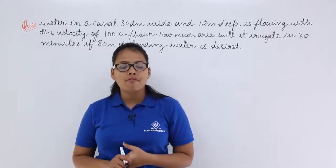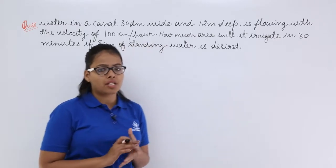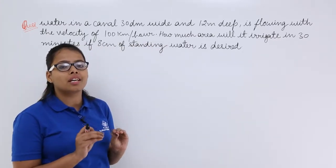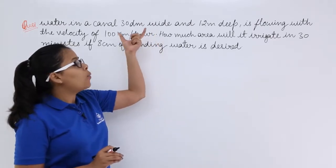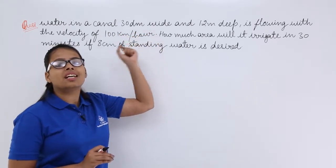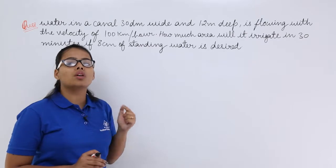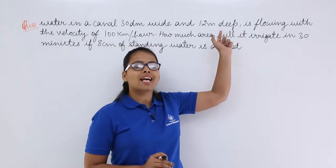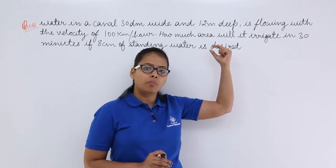How much area will it irrigate in 30 minutes if 8 centimeter of standing water is desired? This statement may seem very complicated but it is actually very easy. First of all you need to focus on the units given to you. Here the wideness of this canal is 30 decimeter which you need to convert into meters first. Here the depthness of this has already been given into meters.